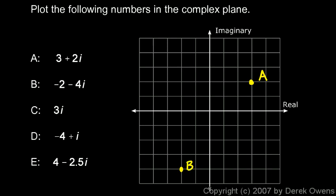Now C here, 3i, this is just a pure imaginary number. I'm going to start at the origin and just go 3 along the imaginary axis. So point C is right up here. It's a pure imaginary number. There's no real part, and that's fine.